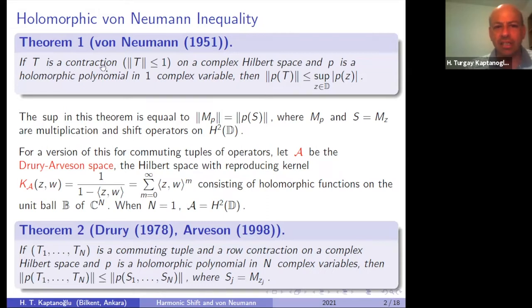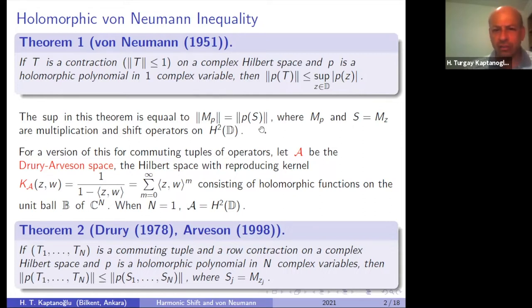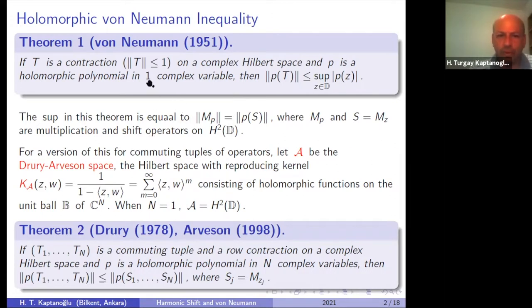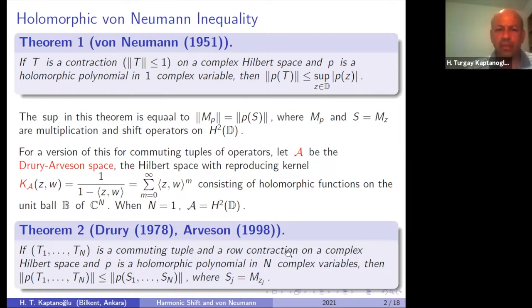If T is a contraction on a Hilbert space and P is a holomorphic polynomial in one complex variable, the norm of P(T) is dominated by the supremum of P(z) on the unit disk. The reason this is valid is that the norm of the multiplication operator by the polynomial is what we really have here. This is for polynomials in one complex variable.